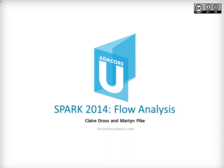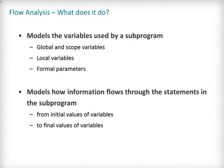This lecture presents the static flow analysis capability provided by the GNATprove tool through the support of SPARK 2014. Flow analysis concentrates primarily on variables and how information flows through them during a sub-program's execution, linking the final value of a variable to its initial value. It also takes into account global variables declared at library level, as well as local variables defined inside sub-programs and formal parameters. For a nested sub-program, we call scope variables those that are declared locally to an enclosing unit. Scope variables are really global variables from the nested sub-program's point of view.